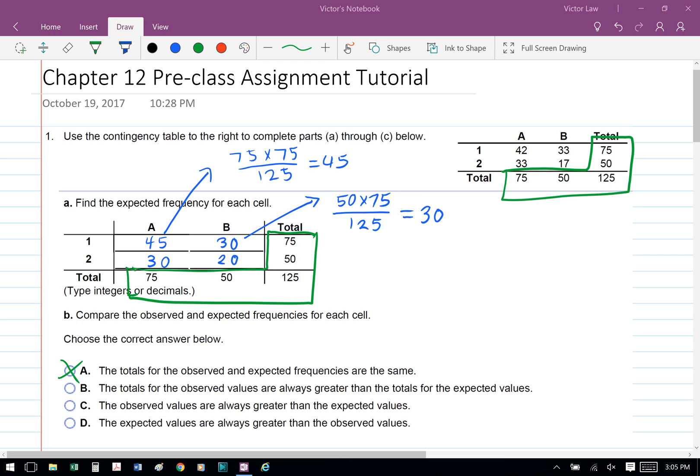Part B: Compare the observed and expected frequency for each cell. The answer for this question is A, the totals for the observed and expected frequency are the same.